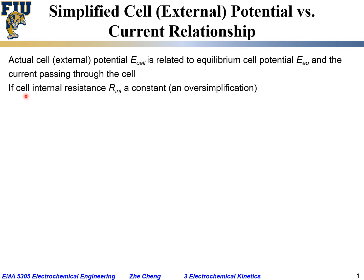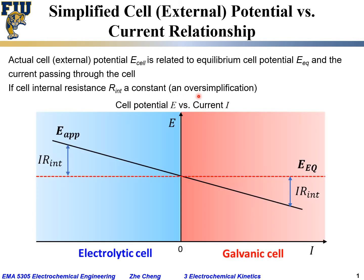If the cell internal resistance, R_int, is a constant — and we have to say this is an oversimplification, because normally the cell internal resistance may not be a constant and may change as the current changes — but if for simplicity we can treat it as a constant, then we would have something like this.